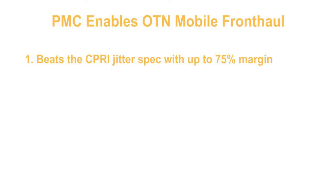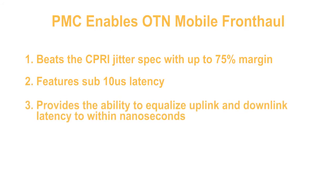With a mobile fronthaul network based on our field-proven Hi-Fi products, operators benefit from the carrier-grade features that OTN enables, but can do so with a solution that: one, beats the CPRI jitter spec with up to 75% margin; two, features sub-10 microsecond latency; and three, provides the ability to equalize uplink and downlink latency to within mere nanoseconds.